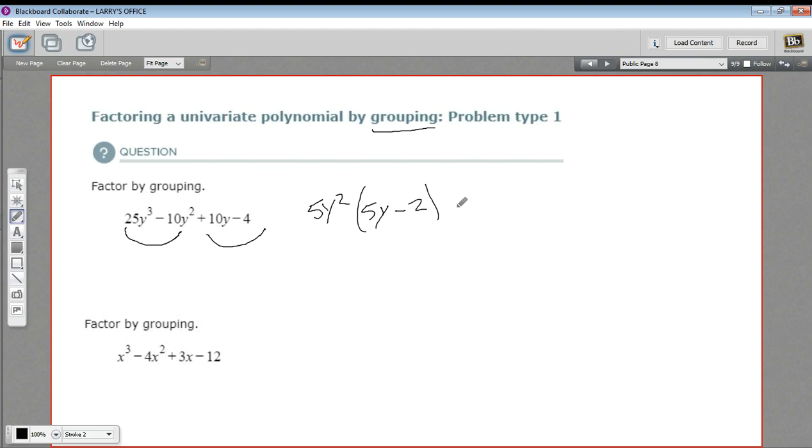Now I've got a plus sign here, so I'll put that in. And I've got 10y minus 4. Looks like the only thing I can factor out of there is a 2. That would leave 5y, and negative 4 divided by 2 is negative 2. Aha! So look what happened here. In the parentheses, I've got the same thing. 5y minus 2, 5y minus 2. If that's the case, you can grab these two guys and put them in another set of parentheses. So 5y squared plus 2, and then multiply it by 5y minus 2.